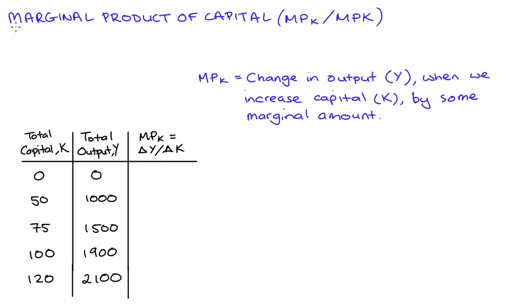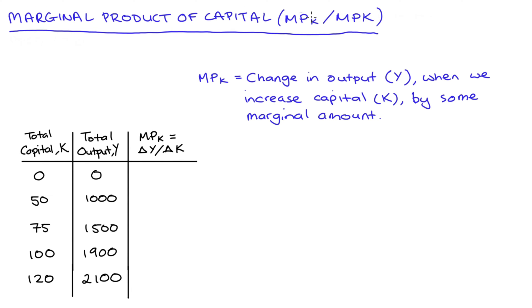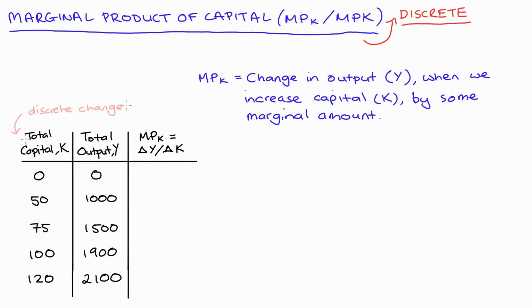Hi everyone. In this video I'm going to talk about the marginal product of capital, which we sometimes notate as MP subscript K, or MPK. This video is all about the discrete case — the simplest case where our variables are changing discretely. You might, for instance, have a table of information like I have here, where these are discrete changes in our variables.